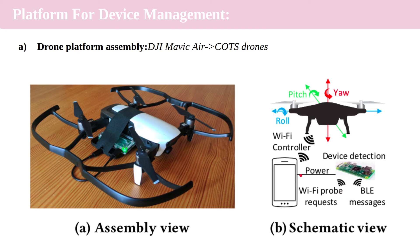The smartphone controls the drone, and the onboard computer is a Raspberry Pi. The Raspberry Pi performs device detection by receiving Wi-Fi probe requests and Bluetooth messages, and starts automatically at startup. The drones used in this paper fly at an altitude of around two meters to explore the area while avoiding obstacles like tables, chairs, and so forth.